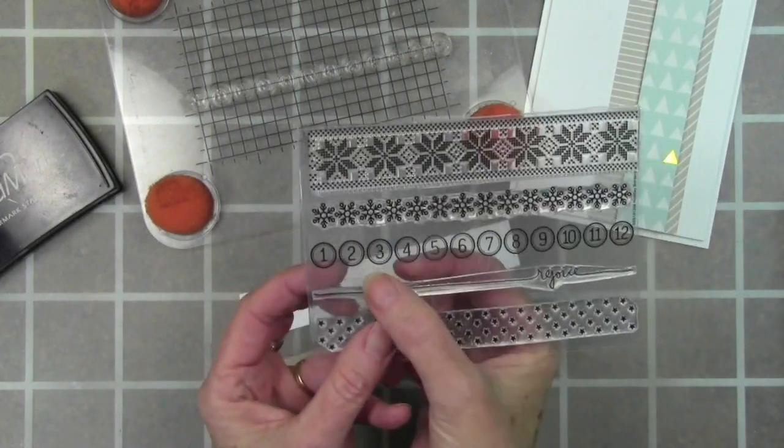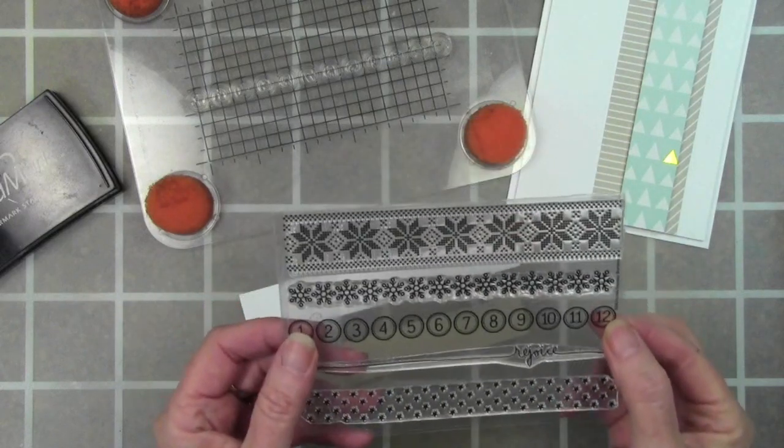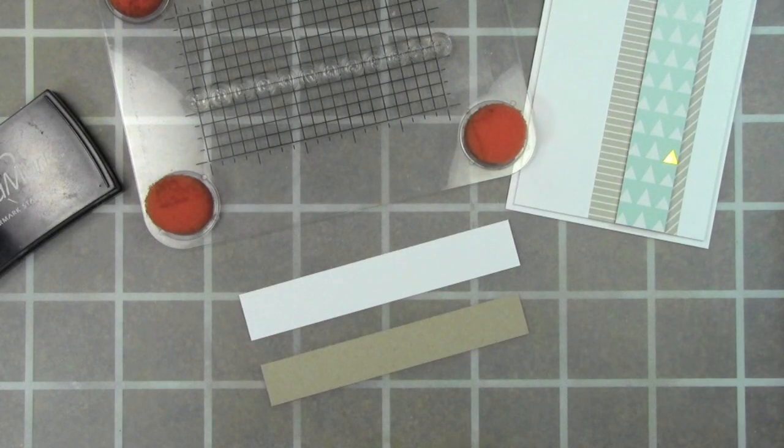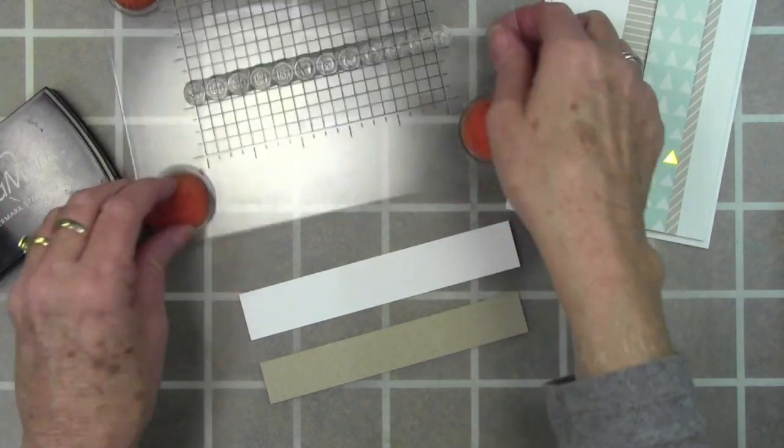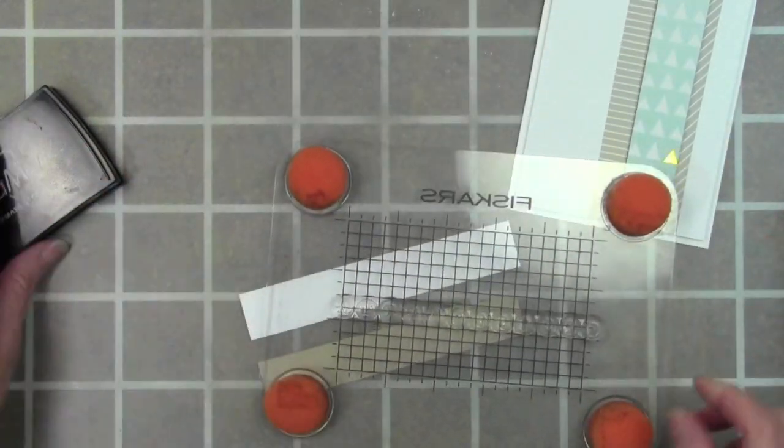I love this row of circle numbers from the stamp set and I thought I would highlight a few of the numbers for my card. So here I have a strip of white cardstock and the Desert Storm which is also included in the kit.